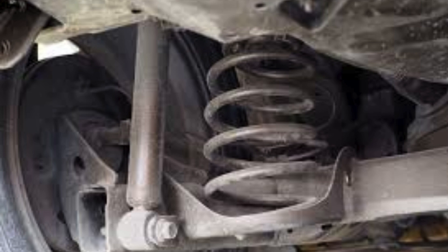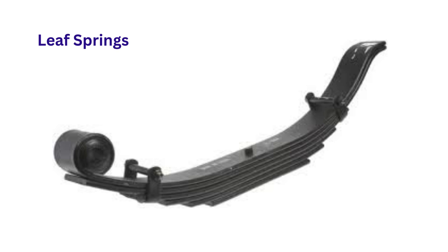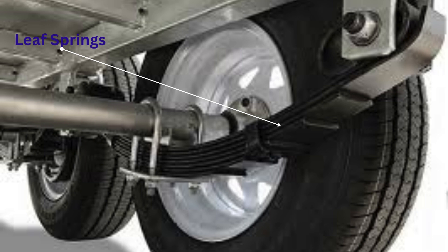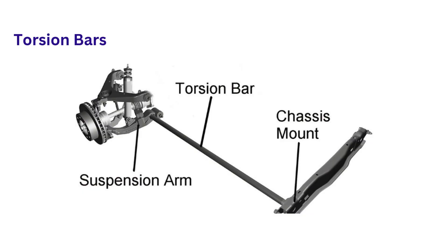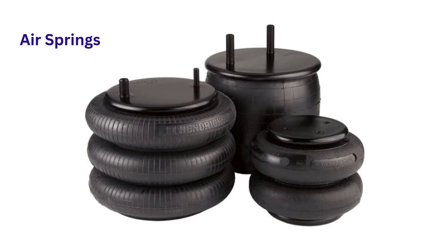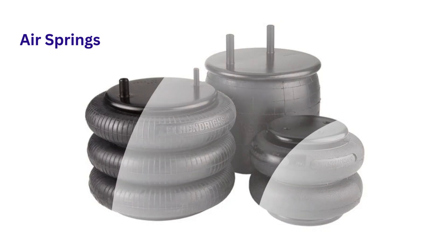Leaf springs are often used in heavy-duty vehicles, pickup truck rear axles, and some SUVs. They consist of layered metal strips that provide flexibility and strength and are well suited to handle heavy loads. Torsion bars are bars that twist to provide resistance to the vehicle's weight and road shocks. Air springs use air pressure to provide a smooth ride, and are common in luxury vehicles and trucks.